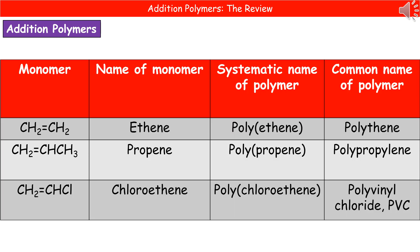The next thing we need to be able to do is work out either the name of the monomer when we're told the polymer name, or the polymer name when we're given the monomer. This is actually far easier than it sounds. To write down the name of the polymer, all you do is write down the monomer name, put brackets around it, and stick the word 'poly' in front.